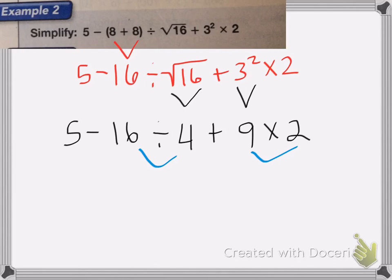So 16 divided by four is four, and nine times two is 18, and I'm going to drop the rest of the numbers plus and symbols.